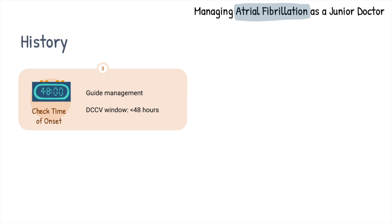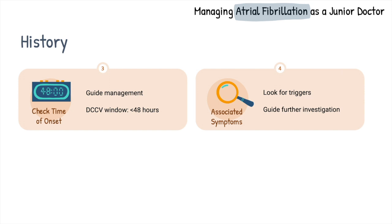Knowing the symptom onset time can help determine the management strategy — i.e. is it safe to shock the patient, as the ESC guidelines recommend onset of less than 48 hours to be safe for DC cardioversion. Discussing associated symptoms can sometimes help identify triggers. Common triggers are infections such as pneumonia or a UTI, hyperthyroidism, or electrolyte imbalance. The history can provide clues to these triggers and blood tests can be done to confirm.